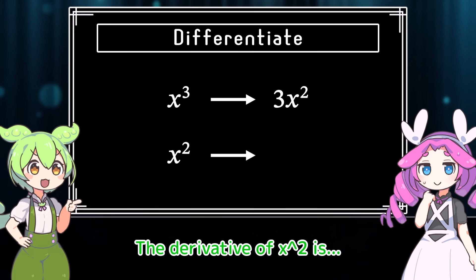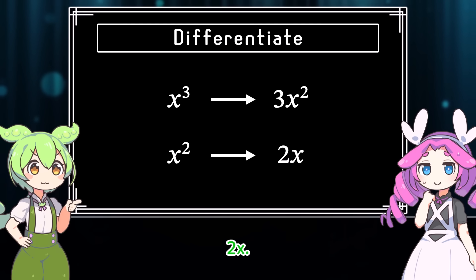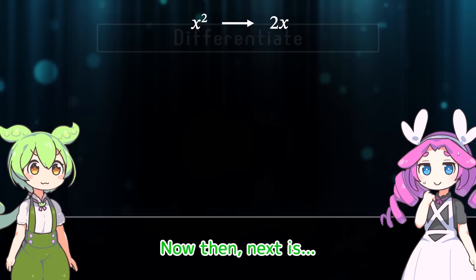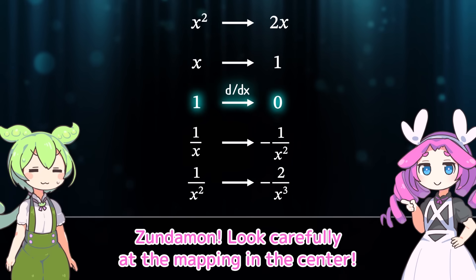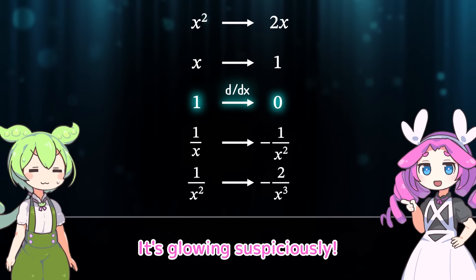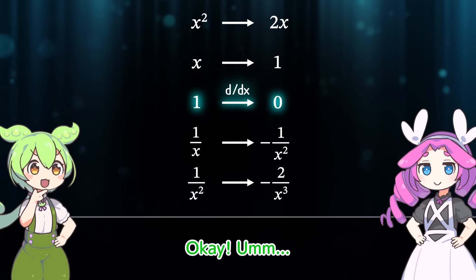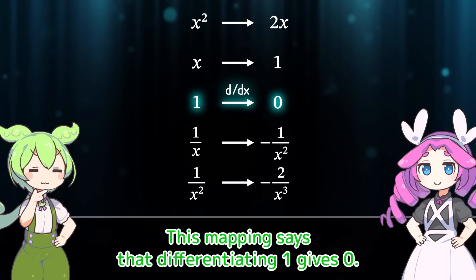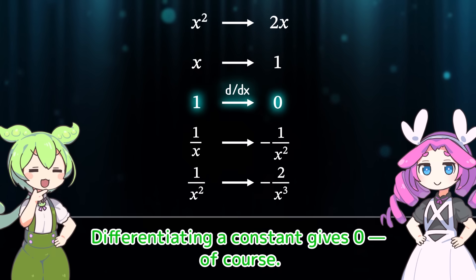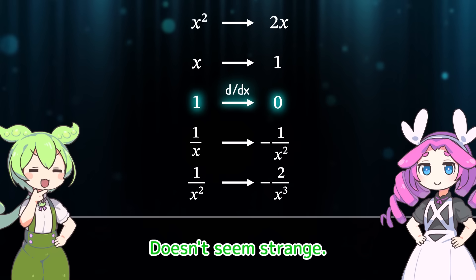The derivative of x squared is 2x. Now then, next is... Huh? I haven't answered yet. Sundamon, look carefully at the mapping in the center. It's glowing suspiciously. Okay, um... This mapping says that differentiating 1 gives 0. Differentiating a constant gives 0, of course. Doesn't seem strange.